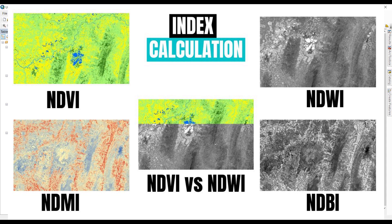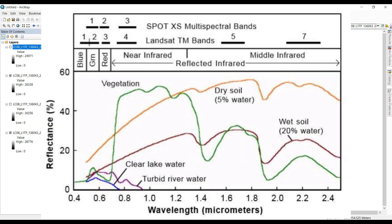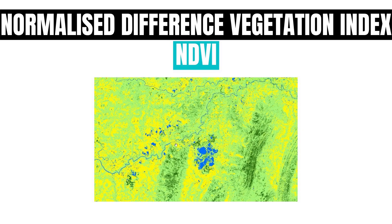This video is about four major land cover classes: vegetation, water bodies, built-up area, and soil moisture, using Normalized Difference Vegetation Index (NDVI), Normalized Difference Water Index (NDWI), Normalized Difference Built-up Index (NDBI), and Normalized Difference Moisture Index (NDMI). The spectral reflectance curve helps to understand these indexes by showing the relationship between the electromagnetic spectrum and percent reflectance for any given material, plotted with wavelengths on the horizontal axis and percent reflectance on the vertical axis.